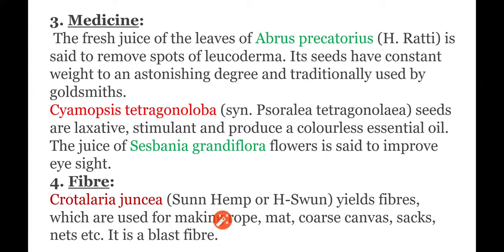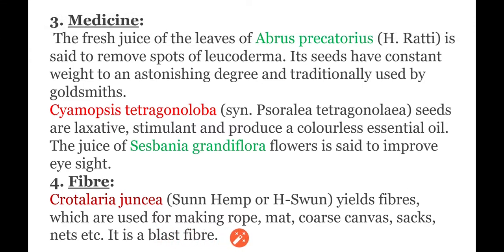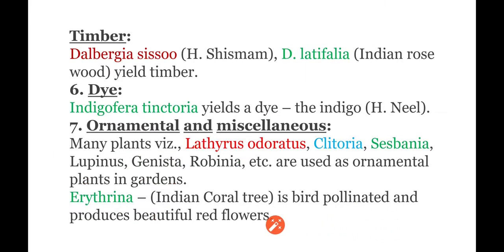The next field is fiber. Crotalaria juncea, also known as sun hemp, yields fibers which are used for making ropes, mats, coarse canvas, sacks, and nets. It is a bast fiber plant.